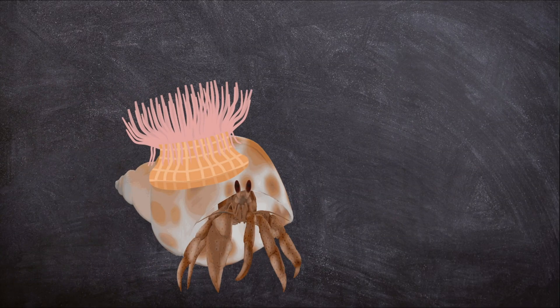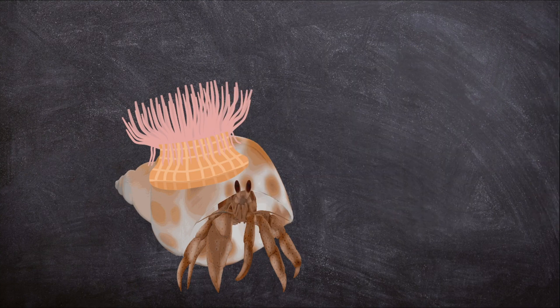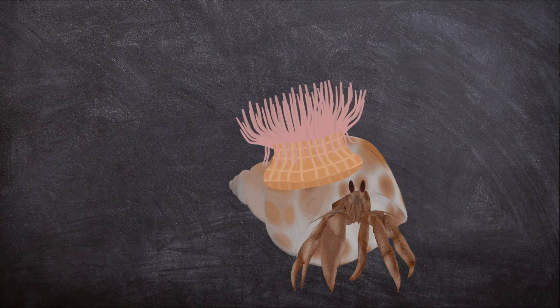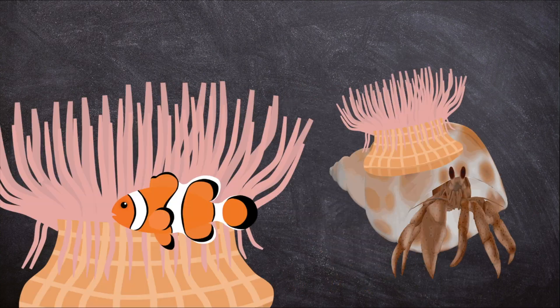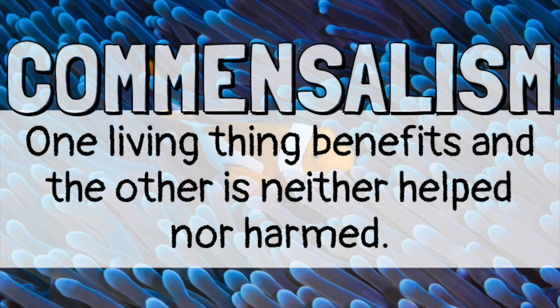Sea anemone also live on hermit crab shells. The anemone protects the hermit crab from predators while getting a free ride and often a free meal out of the crab's leftovers. These are both examples of mutualism.